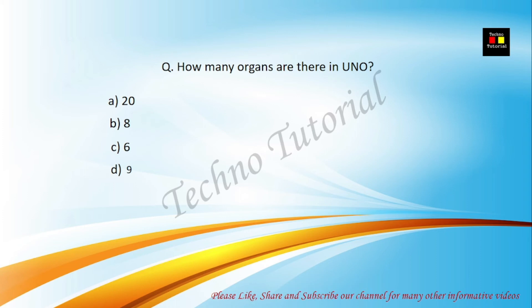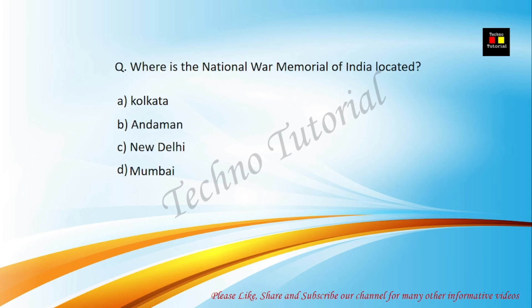How many organs are there in the UNO? The answer options include 28, 6, and 9. The correct answer is 6.